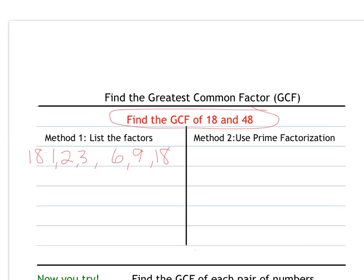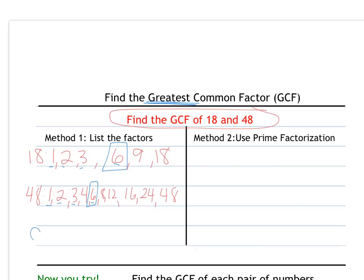For 48, the factors are 1 and 48, 2 and 24, 3 and 16, 4 and 12, 6 and 8. That's a longer list because it's a larger number. The factors they have in common are 1, 2, 3, and 6. I'm looking for the greatest common factor, so the largest factor they share is 6. The greatest common factor of 18 and 48 is 6.